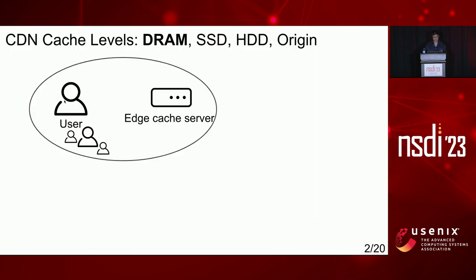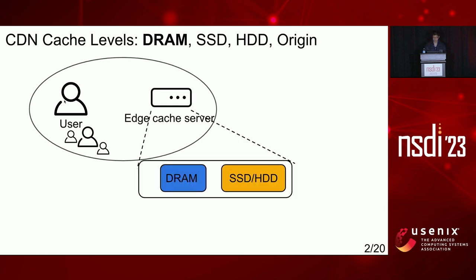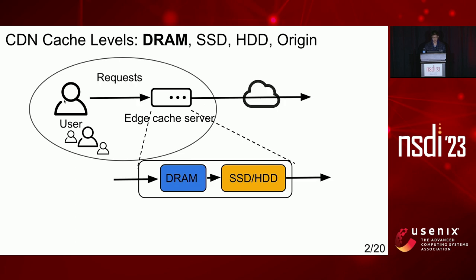YouTube CDN places edge cache near users. Each cache server is equipped with DRAM, SSD, and hard drives used for caching data chunks. A video is stored in these chunks. On the arrival of a request, the server checks if the requested chunk is in its DRAM. If it is a miss, the chunk will be fetched from other cache levels, such as local SSD and hard drives, with the remote origin server being the last resort. In this project, we focus on the DRAM cache. As a first caching level, a better DRAM eviction algorithm can reduce the traffic for all subsequent levels.